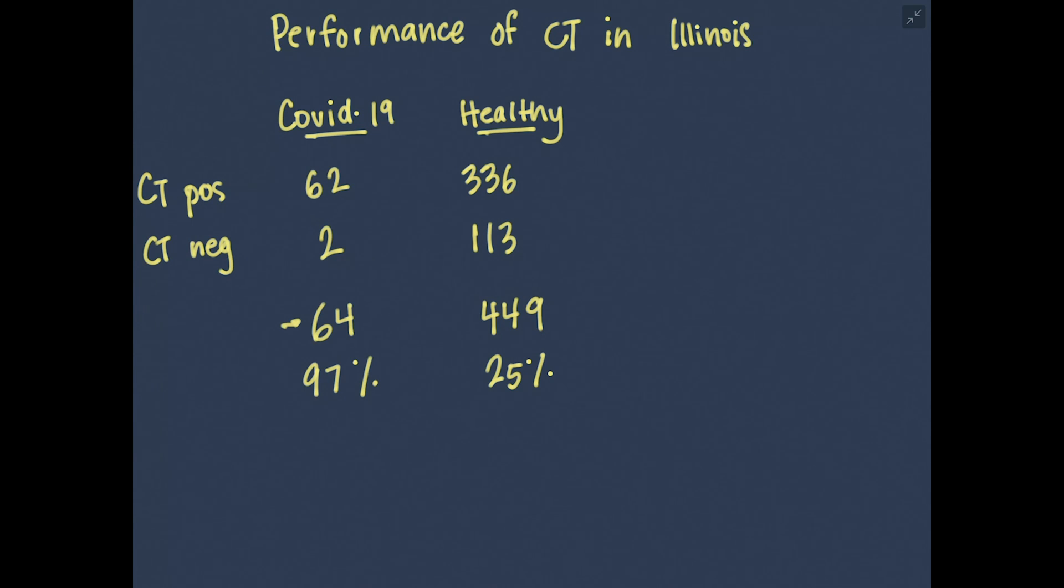So what does the predictive value come out to? Let's look at positive predictive value first. So remember that to calculate positive predictive value, we want to take the total number of cases that we called positive by CT, so this number here, and add them together, and that comes out to 398. Of that 398, how many were actually positive? So that's 62. So our positive predictive value here is only 16%, meaning that 16% of patients who we call positive by CT will actually be positive when you do the PCR test.